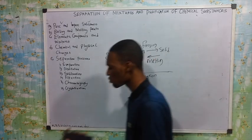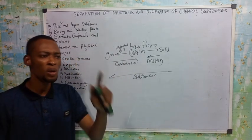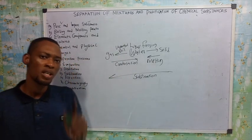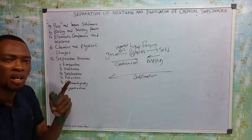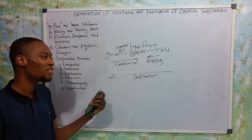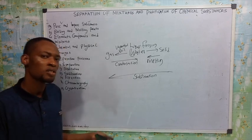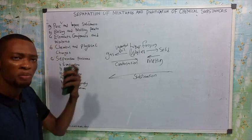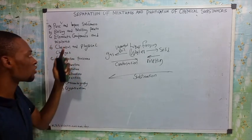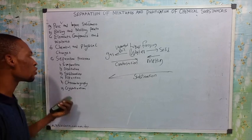Other tests for purity include: pure substances form only one spot in paper chromatography, and they have a definite refractive index. Those are other properties of pure substances and tests for purity.